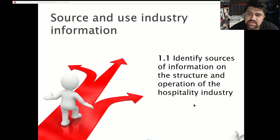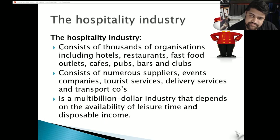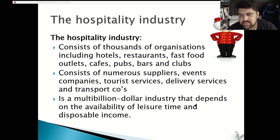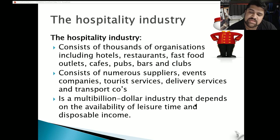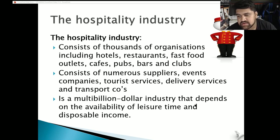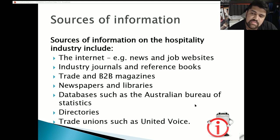Source and use industry information — 1.1: identify sources of information on the structure and operation of the hospitality industry. The hospitality industry consists of thousands of organizations including hotels, restaurants, fast food outlets, cafes, pubs, bars and clubs. It also consists of numerous suppliers, event companies, tourist services, delivery services and transport companies. It's a multi-billion dollar industry that depends on the availability of leisure time and disposable income.